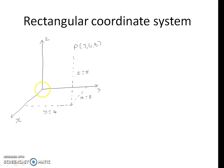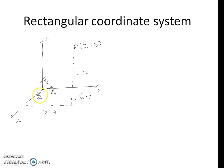The unit vectors are pointing in X, Y, and Z directions. The unit vectors have a magnitude equal to unity, and they point in the direction in which the particular coordinate increases.